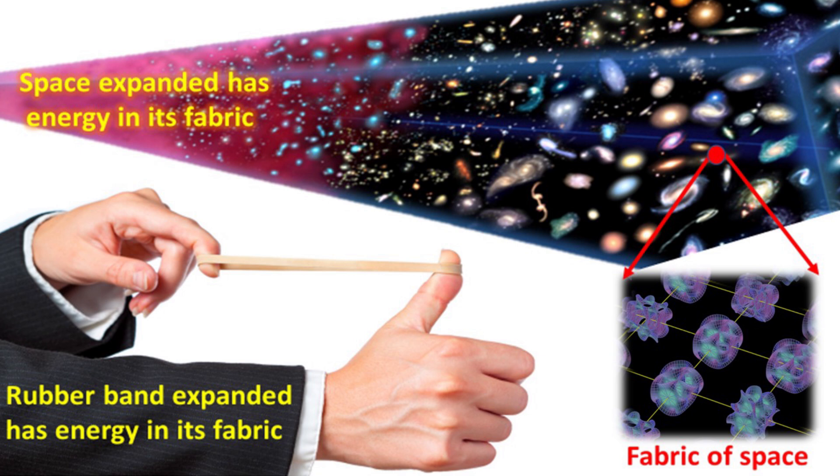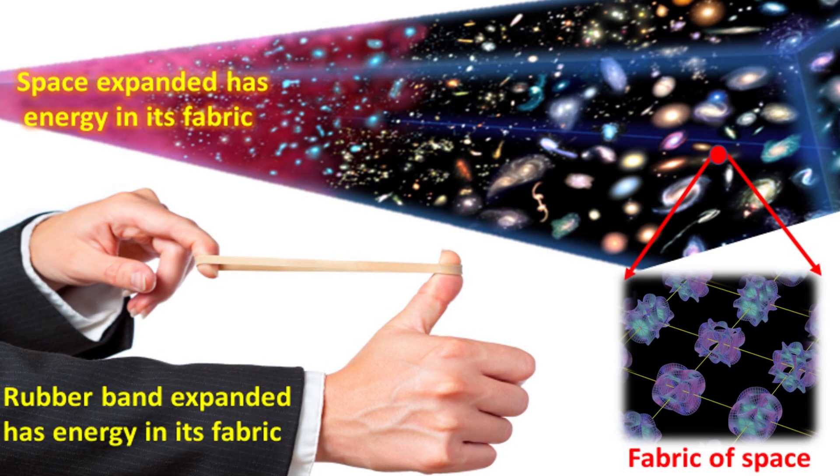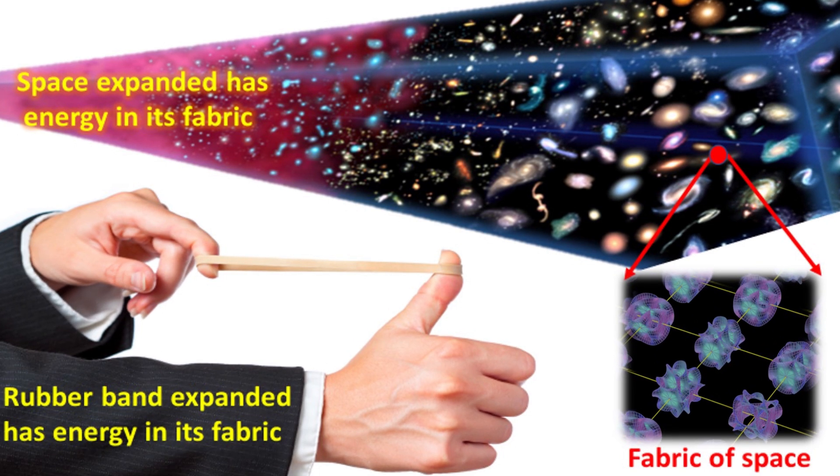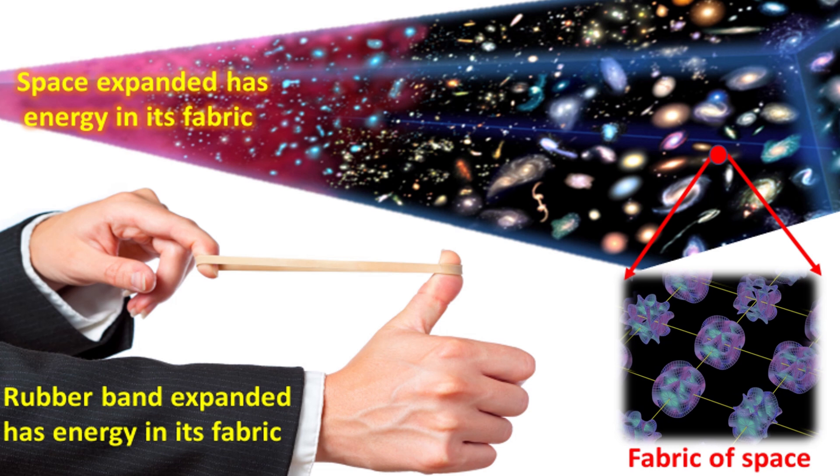Space is thought to be made up of a fabric or structure. As space expands, energy goes into this fabric. One proposal for the fabric of space is shown in the bottom right. This suggests that the weave of the fabric is made up of extremely tiny shapes of other dimensions. The energy in space appears as the zero-point energy, the ZPE.